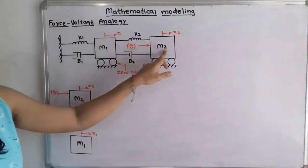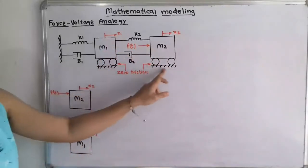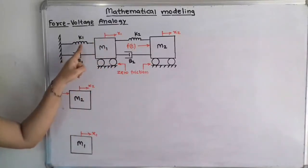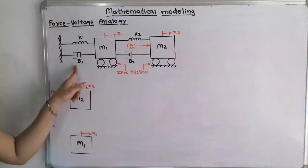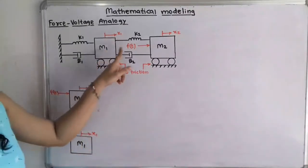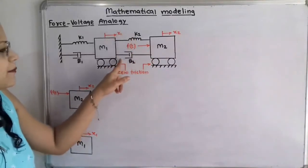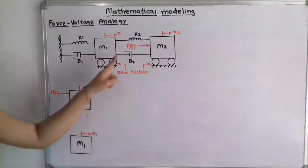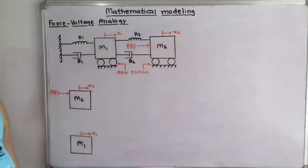In this system, there are two masses and for these masses, there is no friction with the floor. This mass M1 is connected with a spring, cable, and damper with viscous friction coefficient B1. M1 has displacement X1. In between M1 and M2, there is spring K2 and a damper with viscous friction coefficient B2. Force F(t) is applied on mass M2, and M2 has displacement X2.